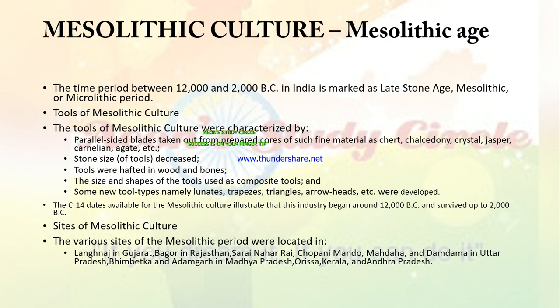Carbon-14 dating available for Mesolithic culture illustrates that the industry began around 12,000 BC and survived up to 2000 BC. The various sites of Mesolithic period were located in Langhnaj in Gujarat, Bagor in Rajasthan, Sarai Nahar Rai, Chopani Mando and Damdama in Uttar Pradesh, Bhimbetka and Adamgarh in Madhya Pradesh, Orissa, Kerala and Andhra Pradesh.